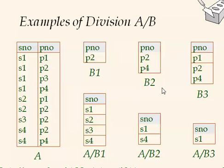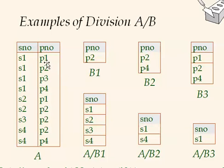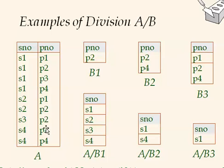For A divided by B2, we look for SNOs that contain both P2 and P4. S1 has P1 and P4, so S1 is in the answer. S2 has P2 but not P4, so it is excluded. S3 also has P2 but not P4, so it is excluded. S4 has P2 and P4, which covers all elements of B2.